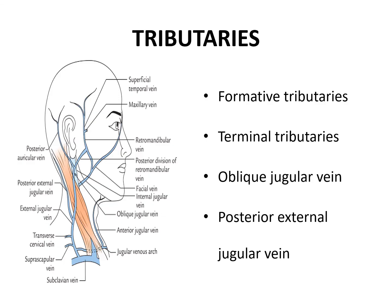Having discussed the course, now we will see about the tributaries. The formative tributaries are the posterior division of the retromandibular vein and the posterior auricular vein. Both these veins join to form the external jugular vein and are thus the formative tributaries.